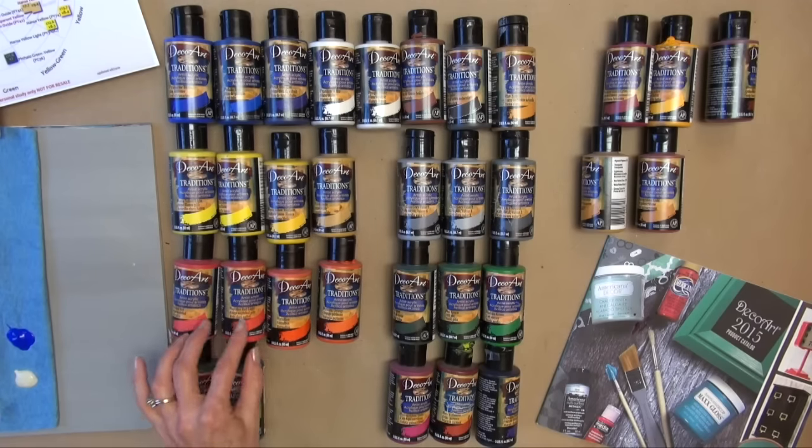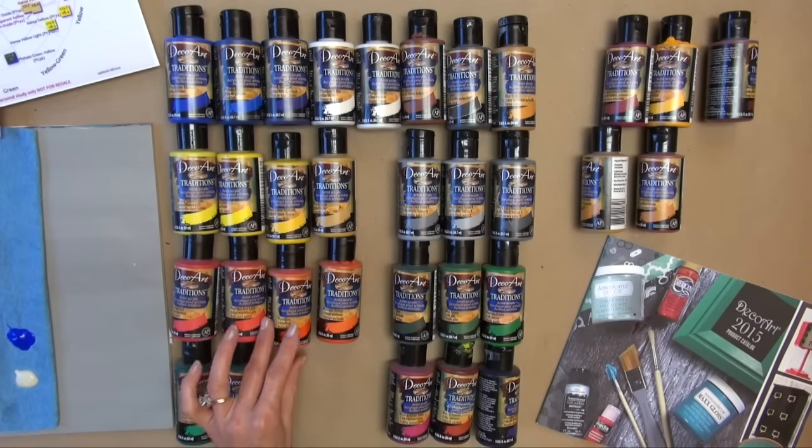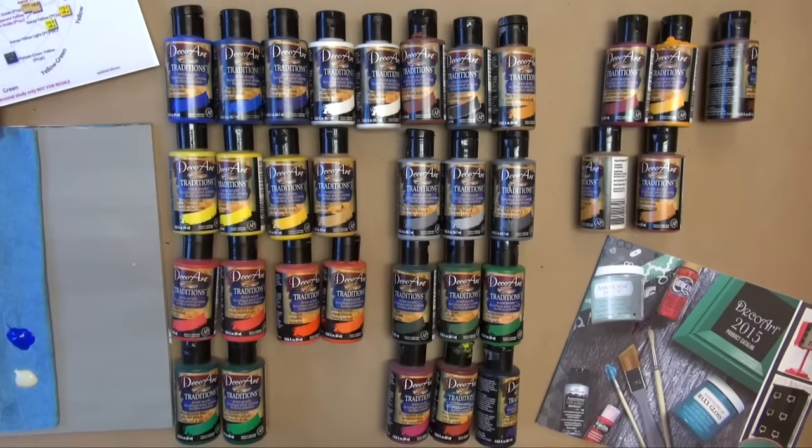A couple reds: naphthol red, naphthol red light. A couple oranges: vermilion and perinone. A couple true greens: phthalo green blue, phthalo green yellow.